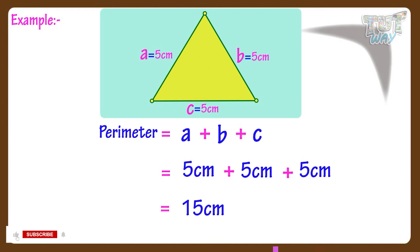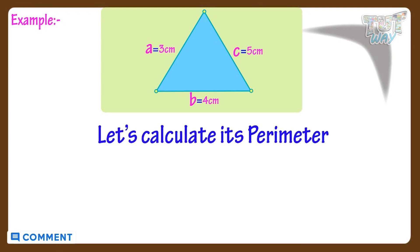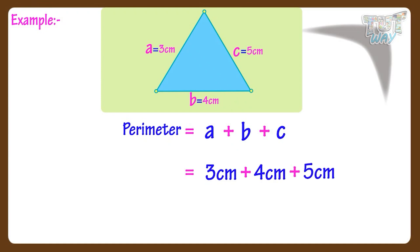Now, let's take another example. Here we have a scaling triangle with length of all sides mentioned. Now, let's calculate its parameter. We know parameter equals A plus B plus C where A, B and C are lengths of sides of the triangle. And here the lengths of sides of the triangle are 3, 4, and 5. So parameter equals 3 plus 4 plus 5 equals 12. So here the parameter equals to 12 centimeters.